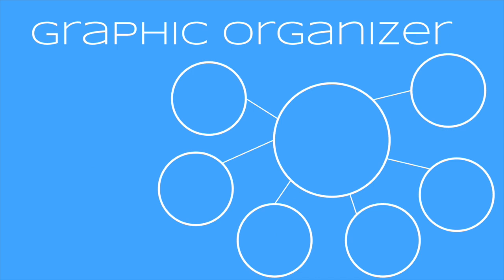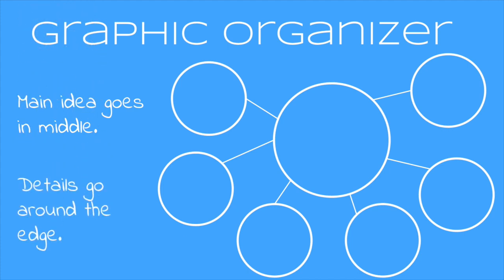The graphic organizer we're going to use is a bubble map. In this bubble map, we're going to put the main idea in the big circle in the middle because it's the main thing we want to focus on. And then we're going to put the key details around the edge, just like we did with topic. So let's find our details.